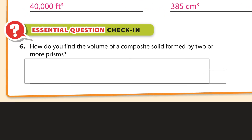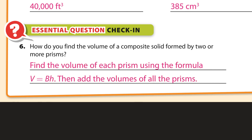How do you find the volume of a composite solid formed by two or more prisms? You find the volume of each prism using the formula — volume = base area × height of the prism — and then you add the volumes of all the prisms together. That's the guided practice for composite solid volumes. Thanks for watching.